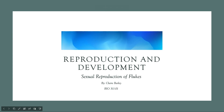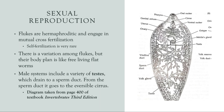Hi, my name is Claire Bailey, and I will be going over the reproduction and development, mainly the sexual reproduction of flukes. First, I want to start by stating that flukes are hermaphroditic and they engage in mutual cross-fertilization. It is stated in the textbook that self-fertilization is very rare. There is variation among flukes, but their body plan is similar to those of free-living flatworms.